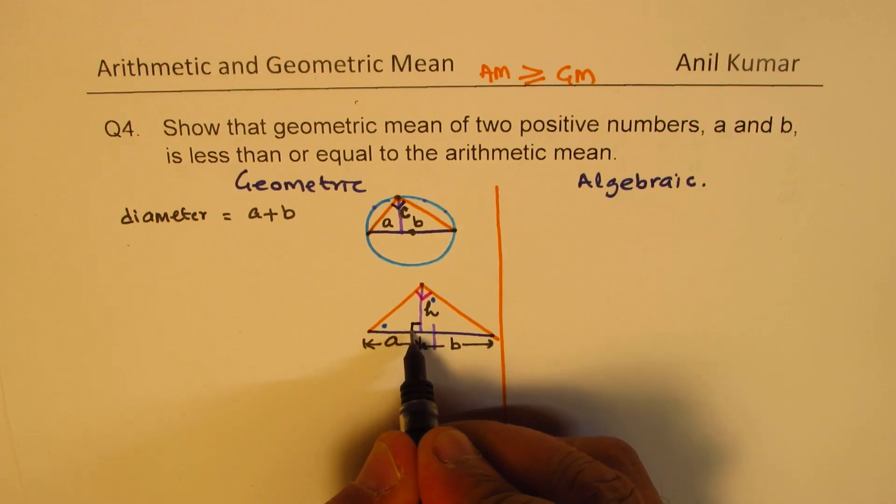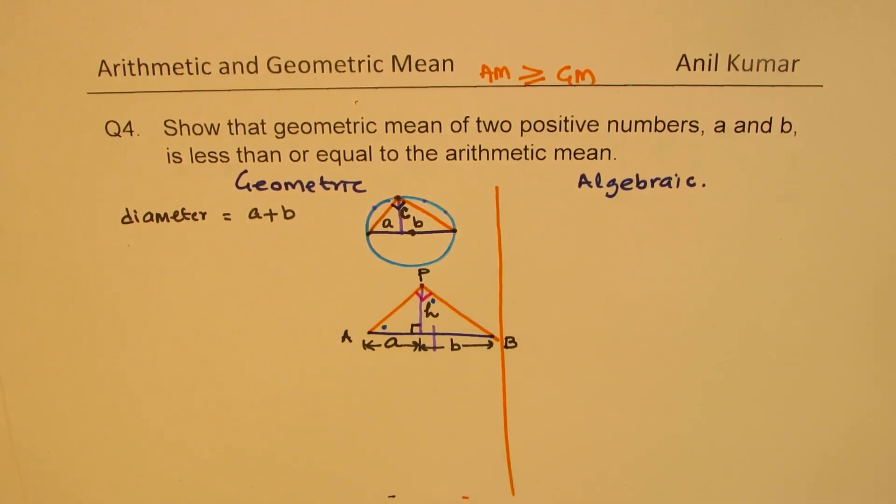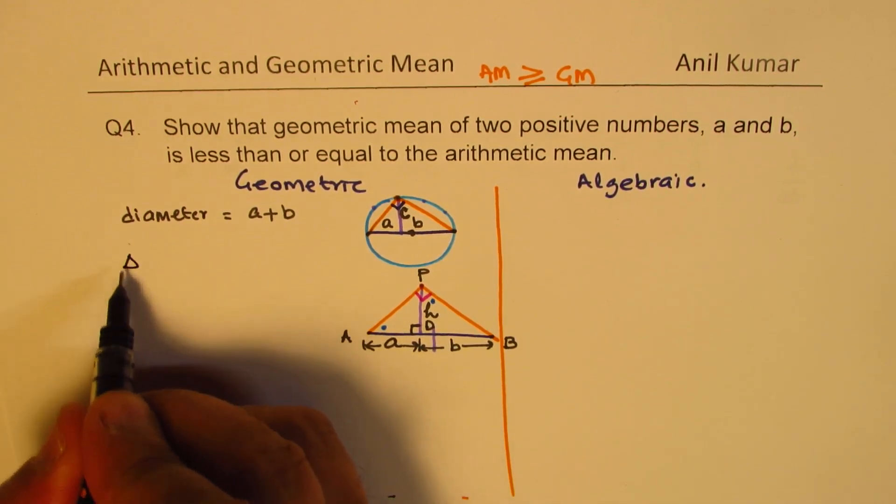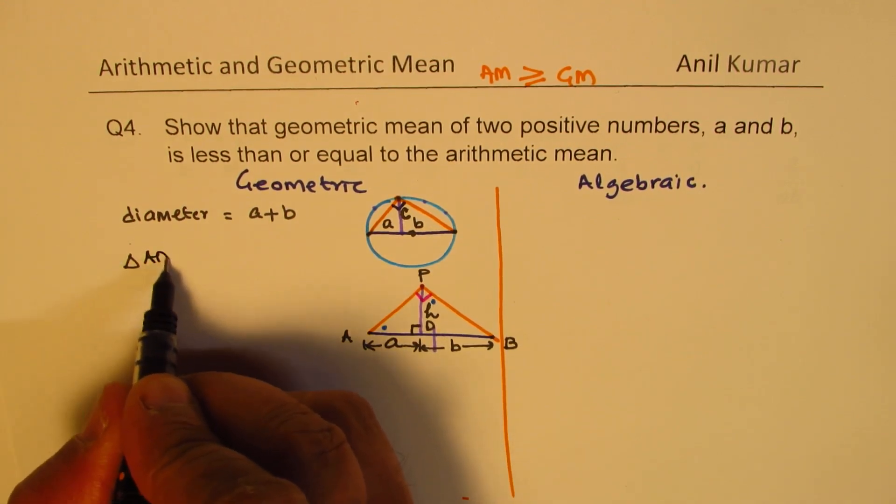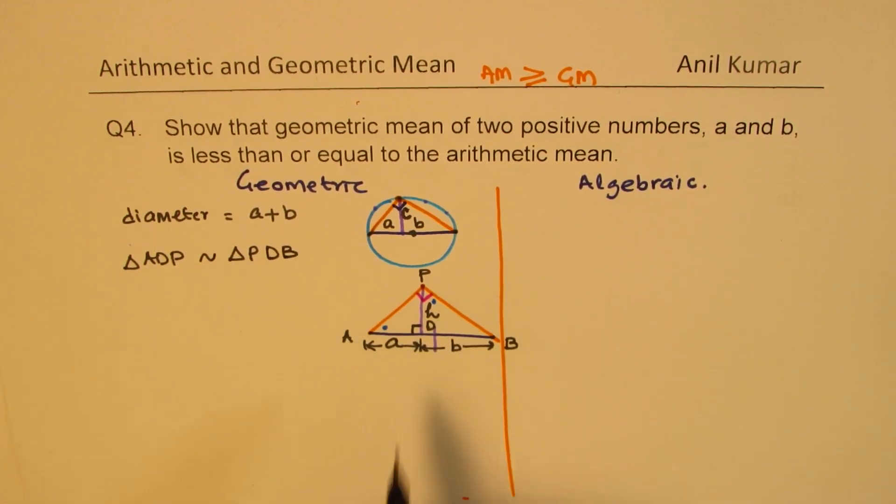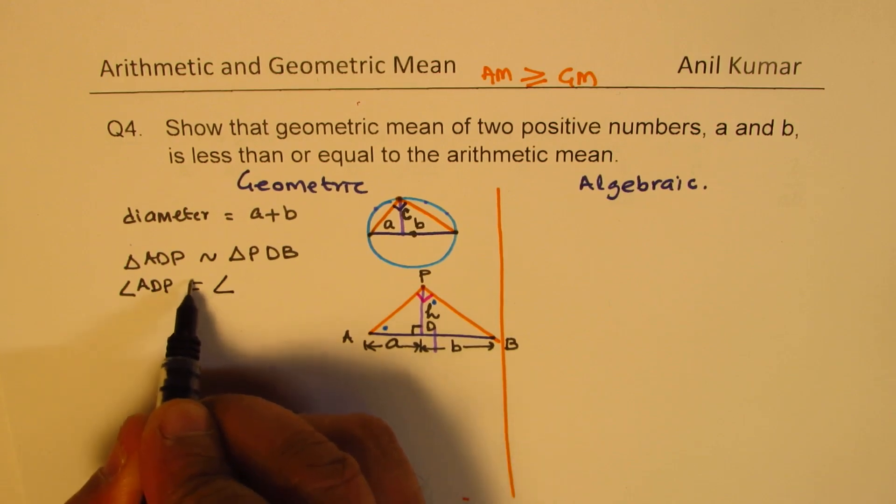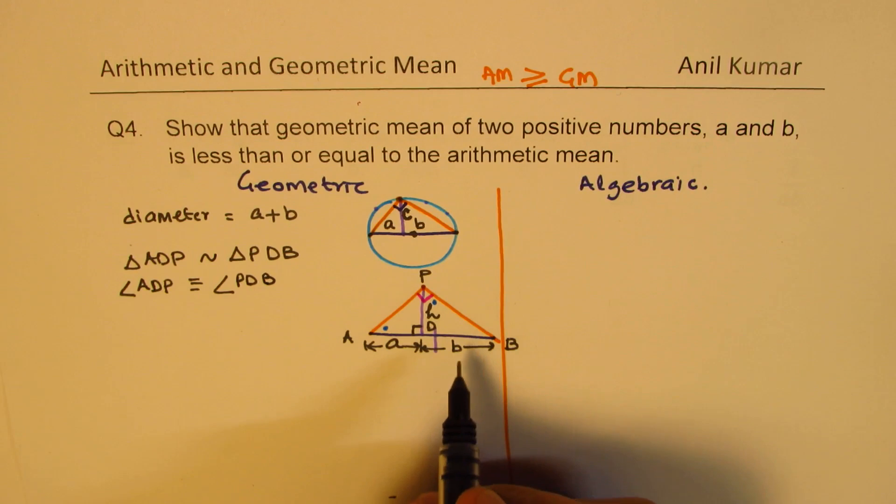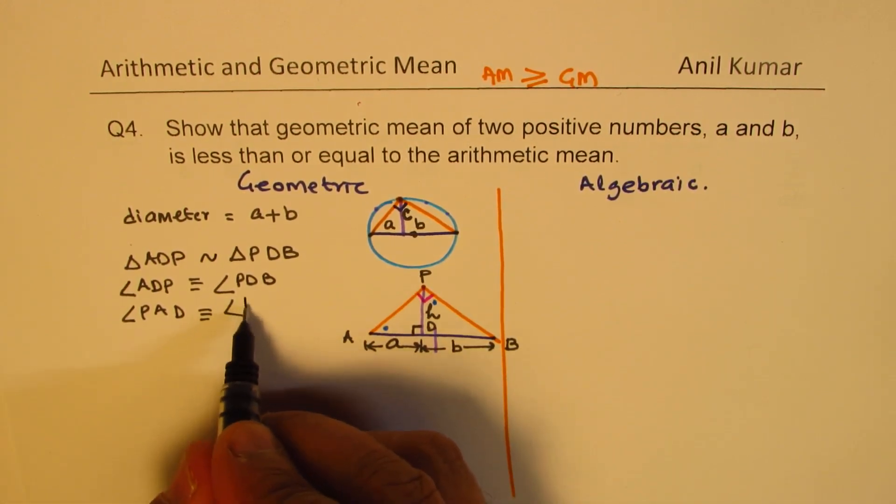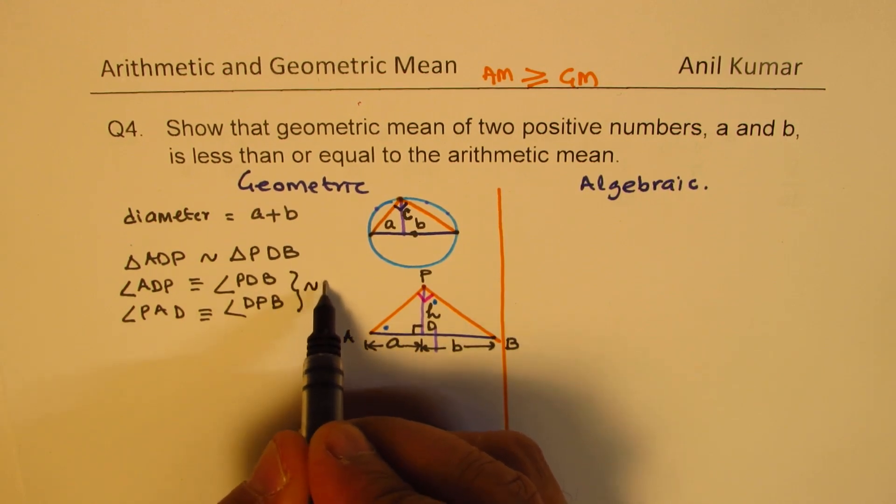So in the given situation, let me label this as AB. Let's say this point is B. So in this given situation, the triangle, let's call this point here as D. The triangle ADP is actually similar to triangle PDB. Since the angle ADP is congruent to angle PDB, and the angle PAD is congruent to angle DPB. So both are same angles. So from AA properties, that is similar because of AA property.